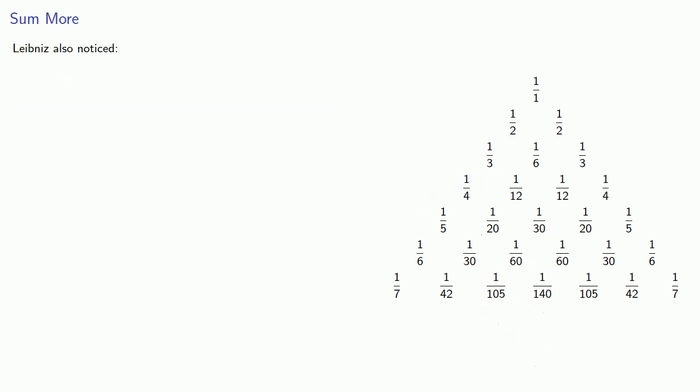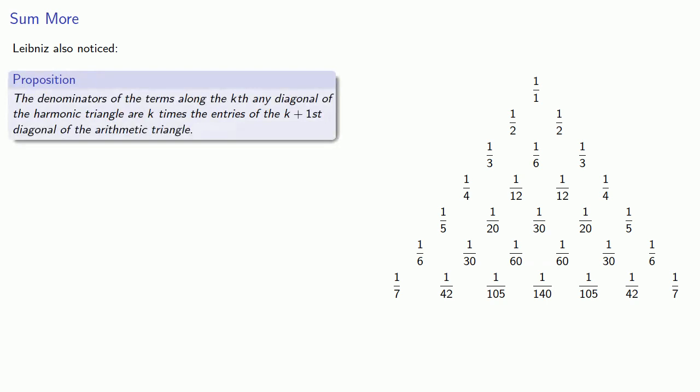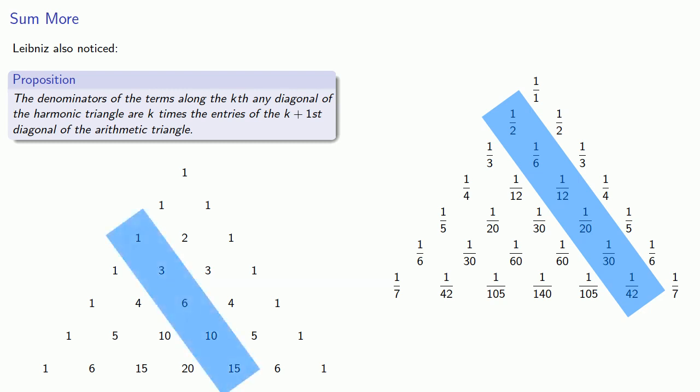Leibniz also noticed that the denominators along the kth diagonal of the harmonic triangle are k times the entry of the k plus first diagonal of the arithmetic triangle. So if we look at the denominators along this second diagonal, they are two times the entries along the third diagonal of the arithmetic triangle.